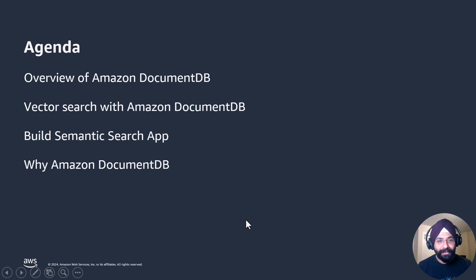My presentation will be divided into four parts. I'll quickly introduce you to Amazon DocumentDB, then we will deep dive into Vector Search capability. The third part, I will tell you how to build a Semantic Search app and show you a demo as well as my notebook. And then in the end, I will give you four reasons why to choose DocumentDB as your Vector Store.